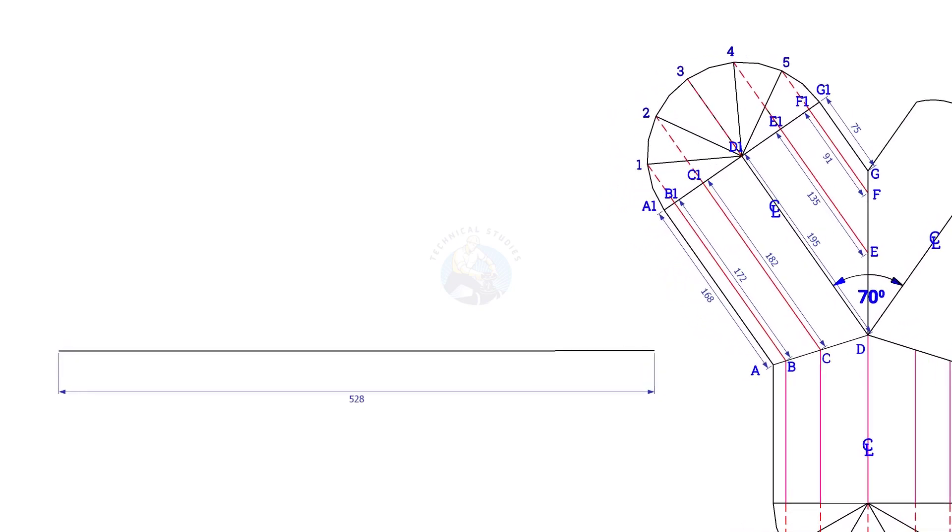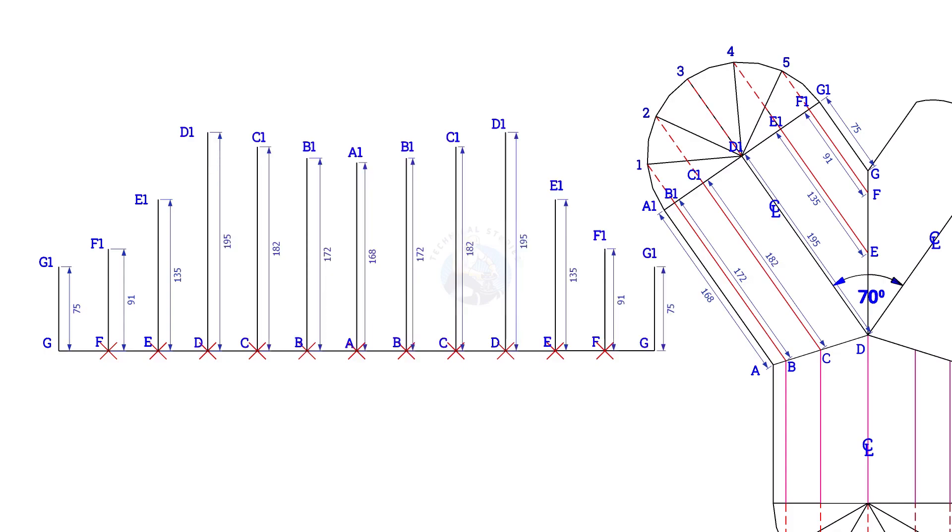Draw the pipe circumference line. Divide the line into 12 equal parts and draw vertical lines G, G1, F, F1, etc., and draw a curve as in the previous layout.